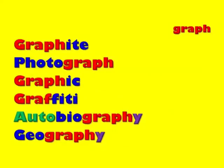Graphite is a material used in pencils, replacing lead, which used to be used in pencils. We now have graphite — a material for writing or drawing. A photograph is an image that comes to us through photons, which is what makes pictures. Something graphic is something that is drawn or written, and graffiti is also something that is drawn or written.